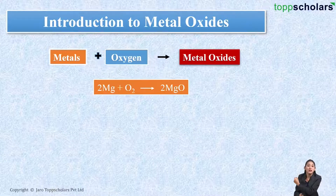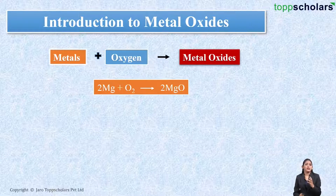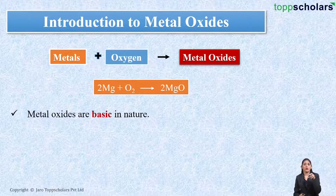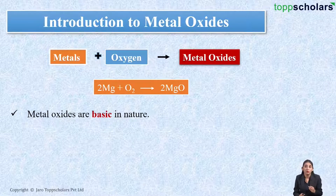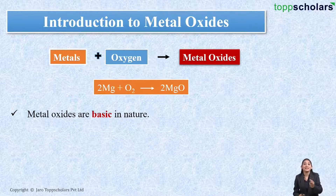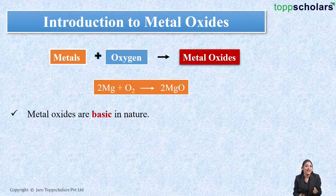Generally, metallic oxides are basic in nature. If you take a metal oxide and dissolve it in water, it reacts with water to give a base. Metal oxides also react with acids resulting in the formation of salt and water, and so we say that metal oxides are basic in nature.